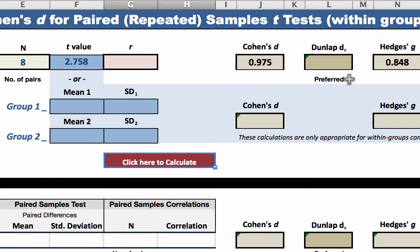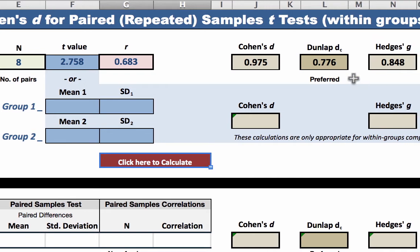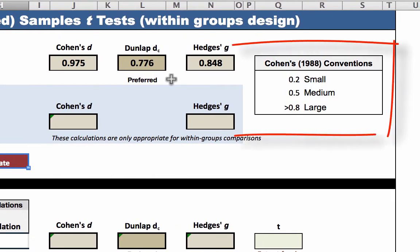Therefore, Dunlap et al have argued convincingly for adjusting the effect size by the strength of the correlation between the variables. Here I am calling this Dunlap's D sub C for corrected D. To get this value, we need to enter the correlation from the paired samples correlations box, 0.683, and we get the adjusted effect size. The effect size, as calculated using Dunlap's correction, was 0.776. According to Cohen's conventions, this is approaching a large effect size.